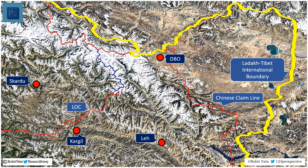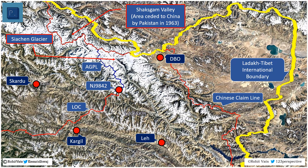The LOC terminates at a point referred to on military maps as Grid NJ9842. From here onward, the LOC which passes along the Saltoro Ridge is known as the Actual Ground Position Line, or AGPL, and terminates to the west of Indra Col. The Siachen Glacier is to the east of the AGPL. The Shaksgam Valley, which was ceded to China by Pakistan in 1963, is located from north-east to north-west of the Siachen Glacier.